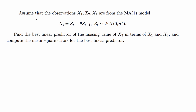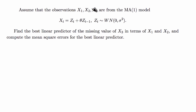In this video I'm going to go over a time series problem. It says assume that the observations x1, x2 are from the moving average 1 model. Find the best linear predictor of the missing value x3 in terms of x1 and x2, and compute the mean square errors for the best linear predictor. This is telling you you have an MA1 and it's asking you to find the best linear predictor for the third term, given the first two terms.